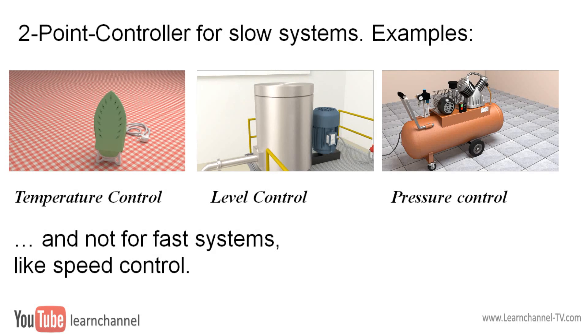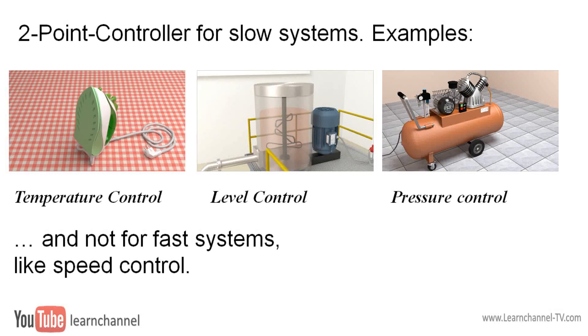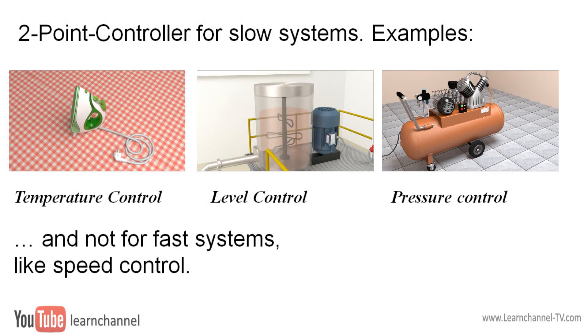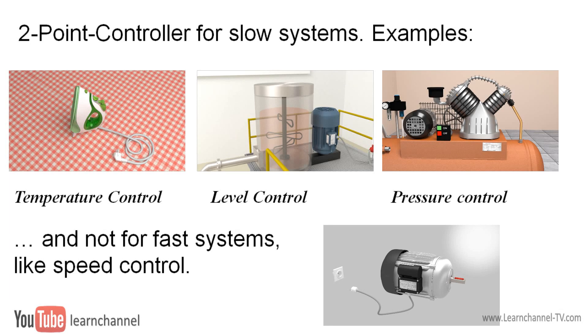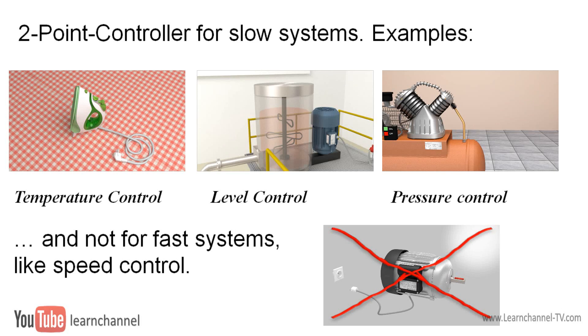In general, it can be said that the two-point controller is a very simple controller, which can be applied to slow systems. In other words, here the controlled variable changes slowly. Examples, therefore, are temperature control, level control, pressure control, etc. For systems which react fast, like a motor as a part of a speed control, you have to use an analog controller. However, this is not the subject of this video.